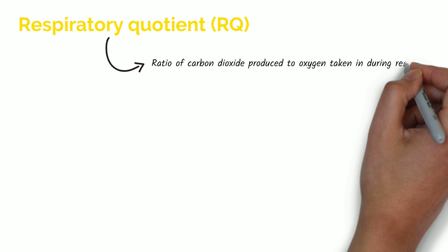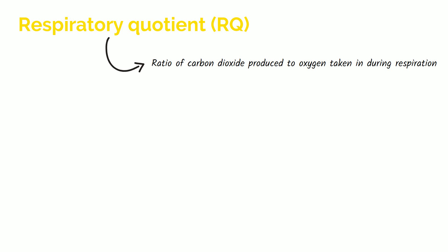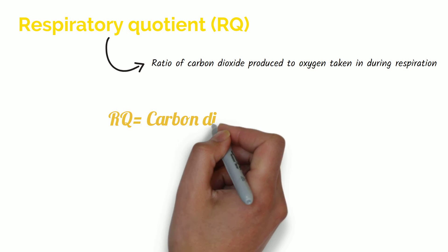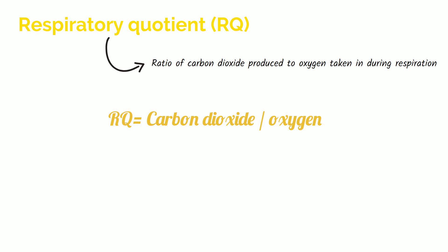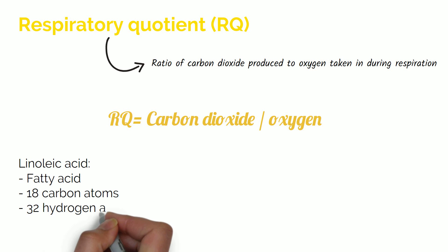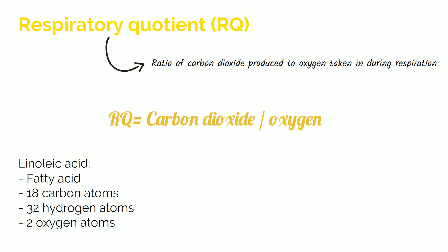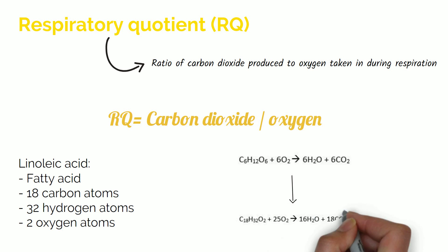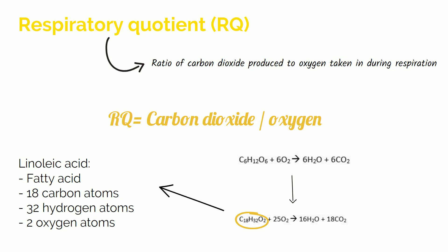RQ is the ratio of carbon dioxide produced to oxygen taken in during respiration. The respiratory quotient equals the amount of carbon dioxide divided by oxygen. For example, linoleic acid is a fatty acid with 18 carbon, 32 hydrogen and 2 oxygen atoms. Balancing the respiratory equation for linoleic acid gives an RQ of 18 divided by 25, which equals 0.72.